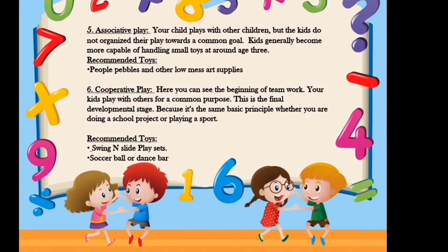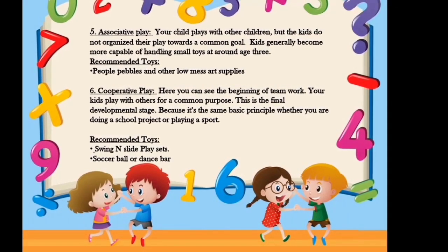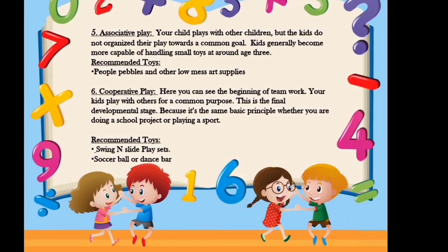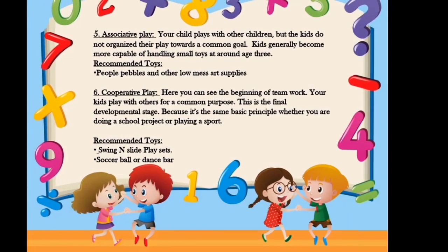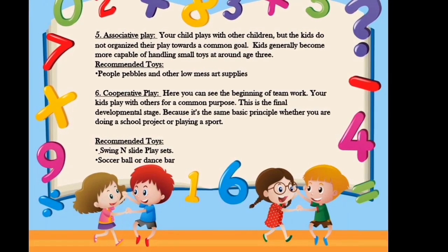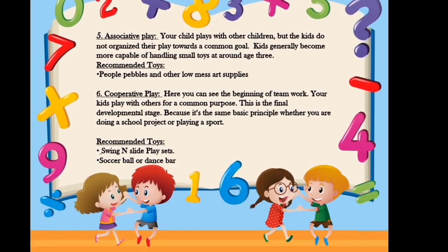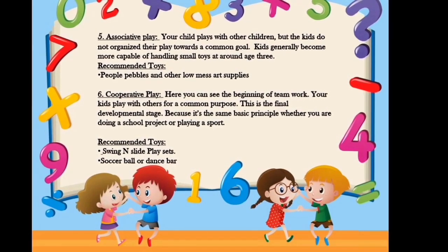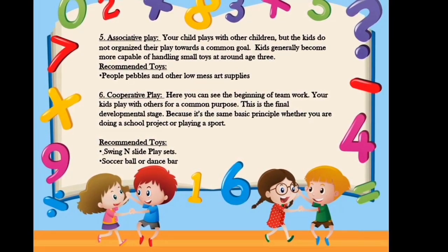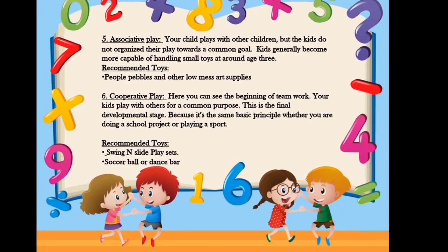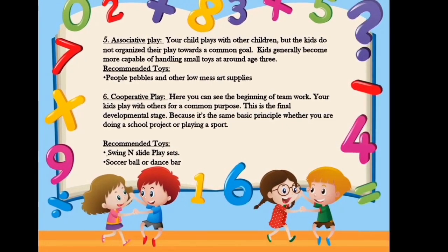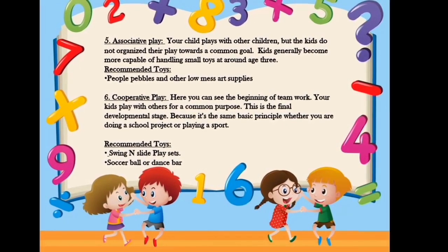Associative play is basically when your child plays with other children but the kids do not organize their play towards a common goal. Kids generally become more capable of handling small toys at around the age of 3.